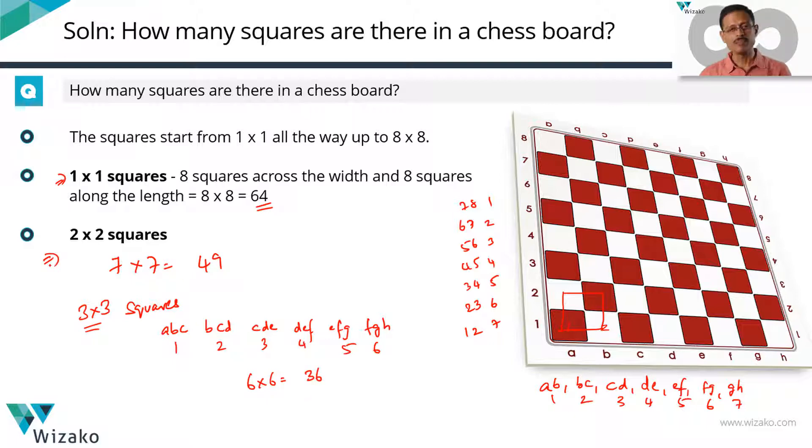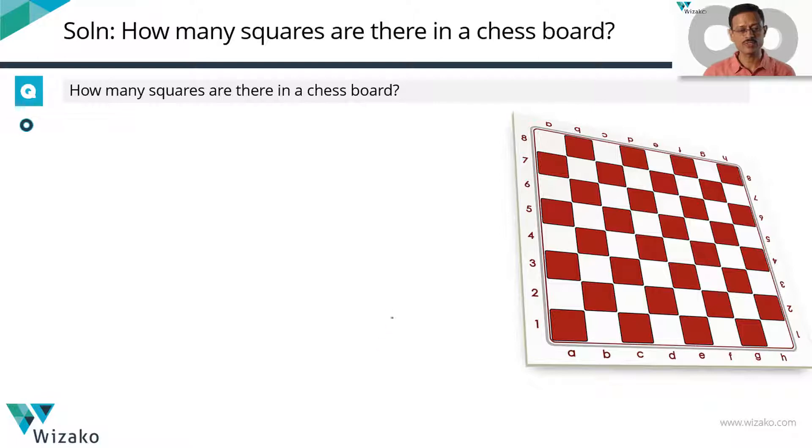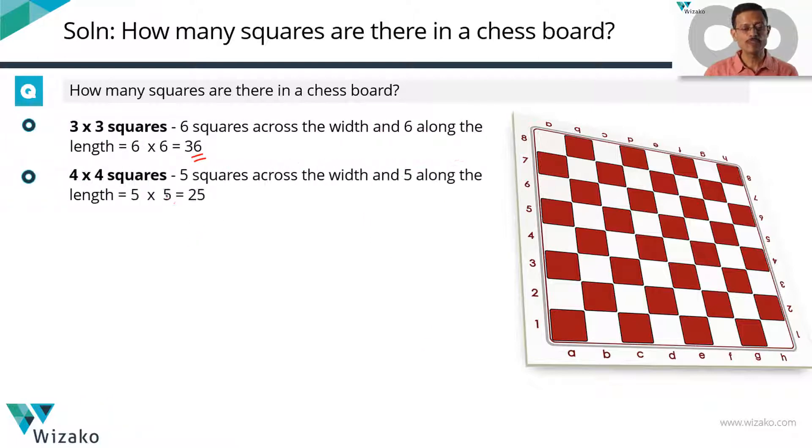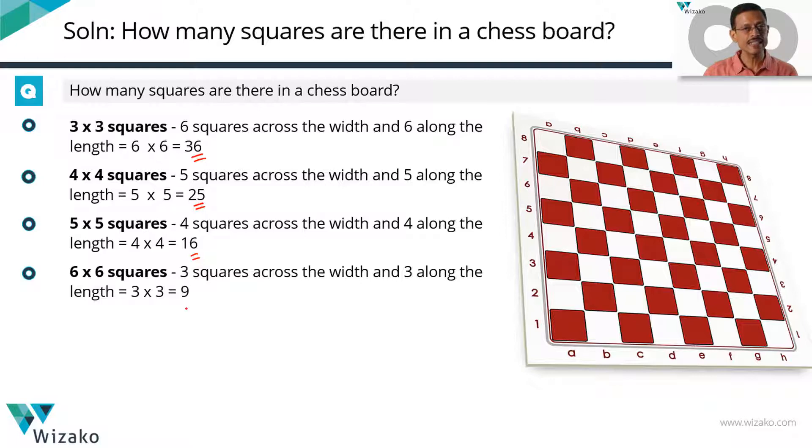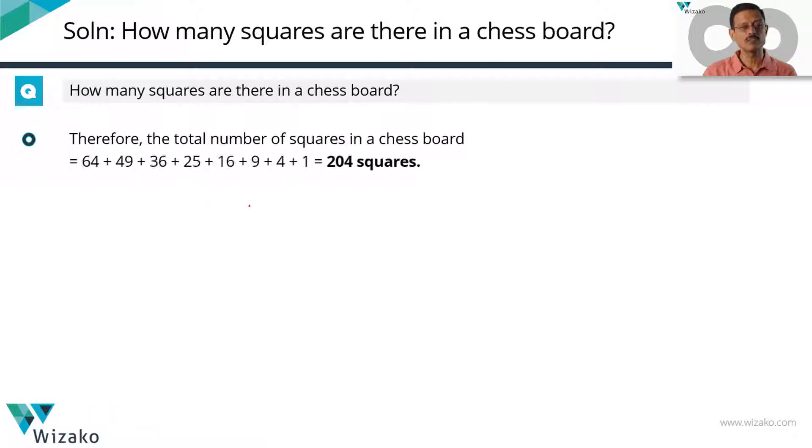Let me put the 2 by 2 in words, understand it and then extrapolate and count all of the rest. With the size of the square increasing by 1 unit from 1 by 1 to 2 by 2, the number of squares across the width comes down to 7 and the ones along the length also has come down to 7. So there will be 7 into 7, 49 2 by 2 squares. We did the calculation for 3 by 3 squares also. It will be 6 into 6, 36 of them. 4 by 4 will be 5 into 5 which is equal to 25. 5 by 5 squares will be 4 into 4, 16 of them. 6 by 6 squares, 3 into 3, 9 of them. 7 by 7 squares will be 2 into 2, 4 of them and 8 by 8 square, there is only 1. So how many squares are there? All that we need to do is basically add up all these numbers. 64 plus 49 plus 36 plus 25 plus 16 plus 9 plus 4 plus 1 which is equal to 204 squares in a chessboard.